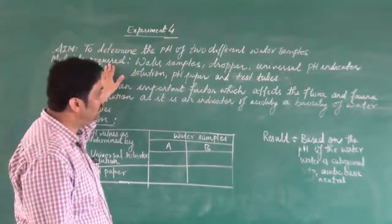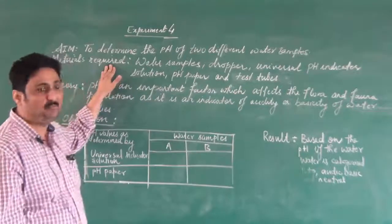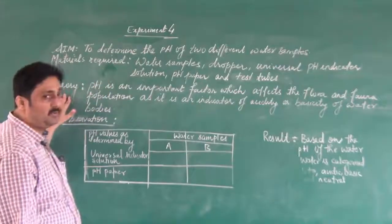These are the two water samples, dropper, universal pH indicator solution, pH paper and test tubes. Now let us talk about the theory.